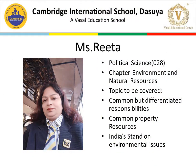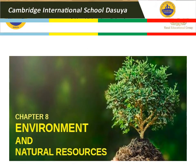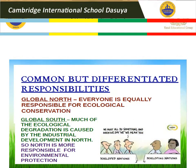The topics we are covering in this chapter — Environmental and Natural Resources — will be: Common but Differentiated Responsibilities, Common Property Resources, and India's stand on environmental issues. Chapter 8: Environment and Natural Resources. First topic: Common but Differentiated Responsibilities.